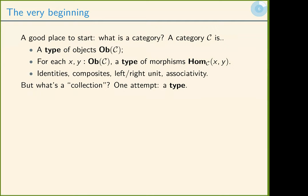So a category has a type of objects, ob, and for each pair of objects in ob(C), a type of morphisms, hom, from X to Y. The identities and composites become dependent functions. The left and right unit laws become paths. Left and right unit laws and associativity become paths in the space of morphisms.